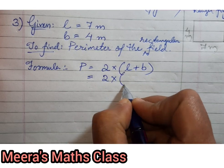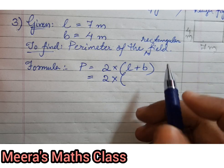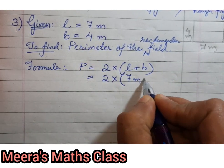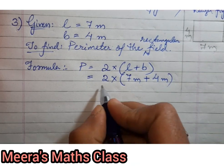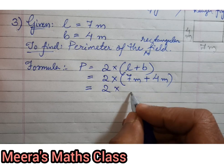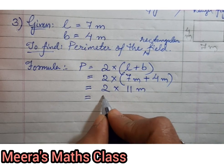Then write 2 into, put the bracket because we are going to add first, length plus breadth. What is it? 7 meter length plus 4 meter breadth. Now 2 into (7 + 4) is 11 meters. That is equal to 22 meters is the answer.